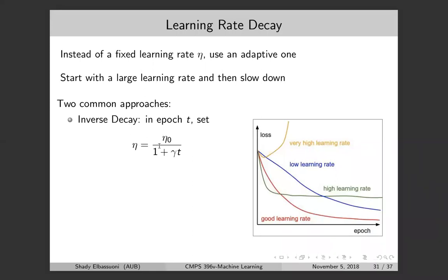We set the learning rate to a constant divided by one plus gamma times t, where t is the epoch. So initially it's set to a high value, and as we train more and more it becomes lower. We keep decreasing it because once we've trained more we have good weights, and we want to reduce the updates — we don't want large changes. Initially the weights are random so large updates are fine, but later you want to update carefully.